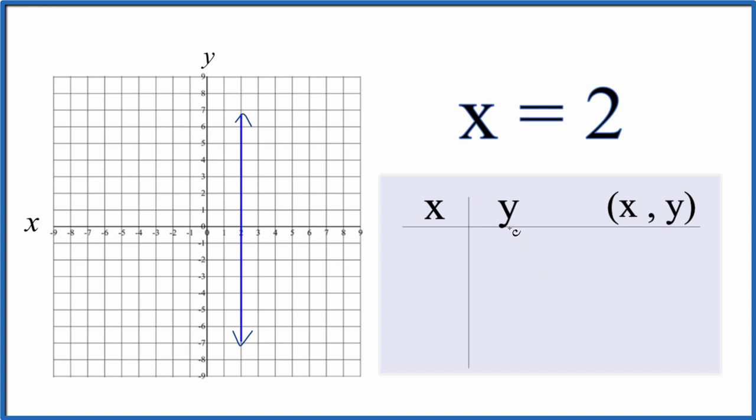So let's put some numbers in here and then graph them, make sure that we have this right. So x equals 2, always equals 2, no matter what value for y we have. So let's just put some numbers. I'm just making these up. 3, 0, negative 3. That gives us the points.